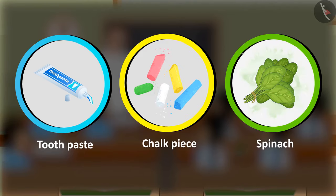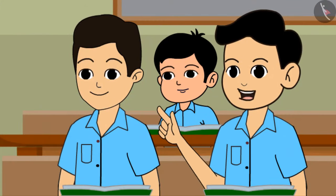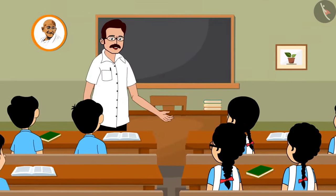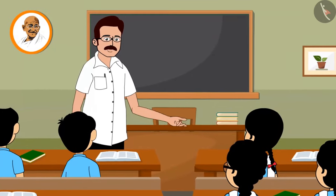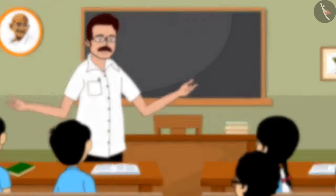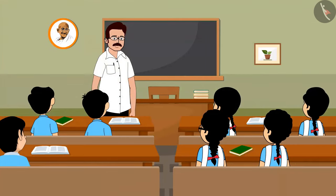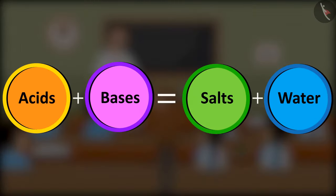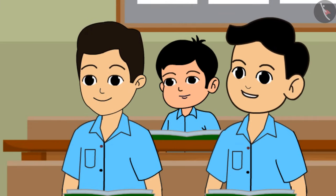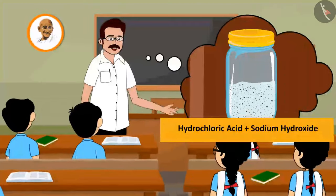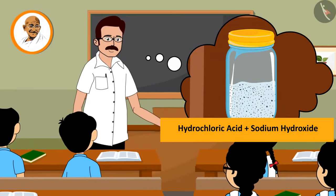Children, can you tell whether there are acids or bases in toothpaste, chalk, peas, and spinach? Sir, some items are sweet — do they have acids or bases in them? They have neither. Some substances have neither acids nor bases. What will happen when acids and bases get mixed? When acids and bases meet, generally salts are formed along with water. The salt we consume is formed by combining hydrochloric acid and sodium hydroxide.